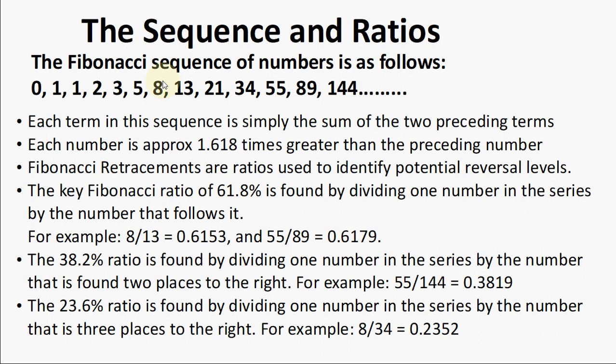One of the remarkable characteristics of this numerical sequence is that each number is approximately 1.618 greater than the preceding number. So if you divide 3 by 2, you will get 1.618. Divide 5 by 3, you get the same thing. Divide 89 by 55, you get the same 1.618. This common relationship between every number in this series is the foundation of the common ratios used in retracement studies.